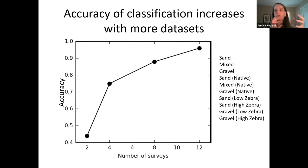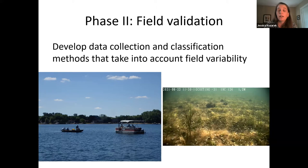We're currently working on phase two, which is the field validation — taking the methods developed in the lab and accounting for field variability: a greater range of mussel density, a greater range of different substrate types, and complicating factors such as vegetation. We're verifying and refining our classification model so that we're able to map zebra mussel density in the field.